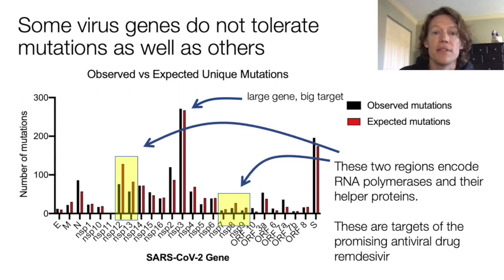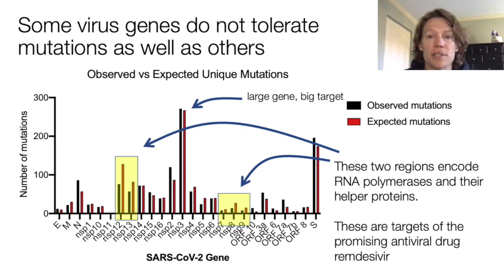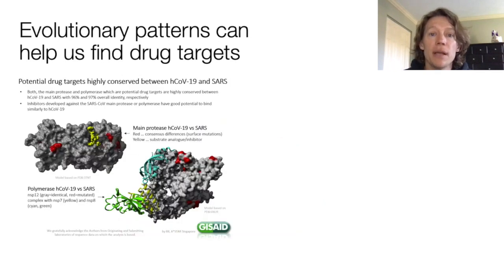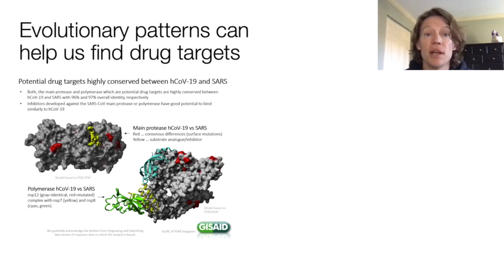As it turns out, these enzymes encoded by these genes are targets of the promising antiviral drug known as remdesivir, which has shown activity against MERS, a related coronavirus. So to conclude, evolutionary patterns can help us find drug targets by identifying genetic regions that don't change much. Here's a picture showing the enzymes found in the original SARS virus and the current SARS-2 virus are very similar and potentially susceptible to the same drugs.